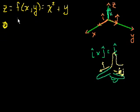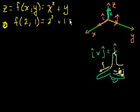what's f of, I don't know, 2 comma 1? Well, that would mean x is 2, so it's 2 squared plus 1. Well, it equals 5.